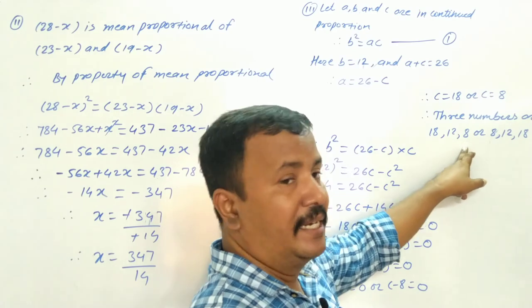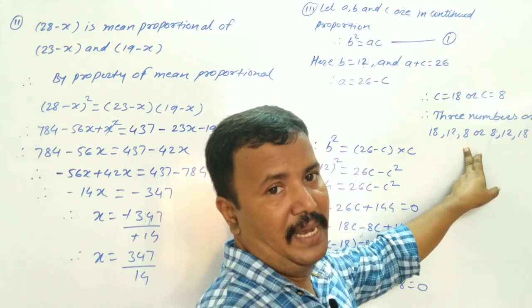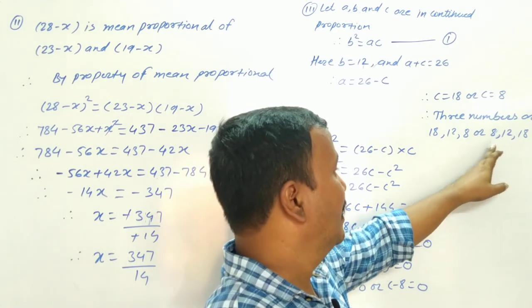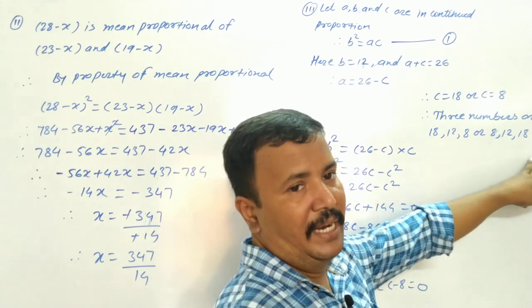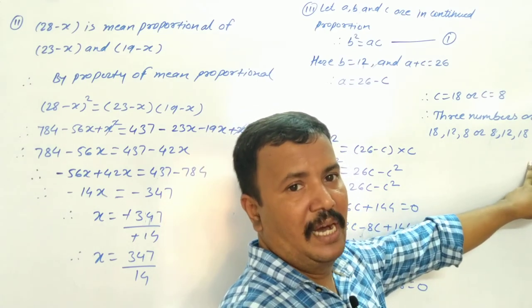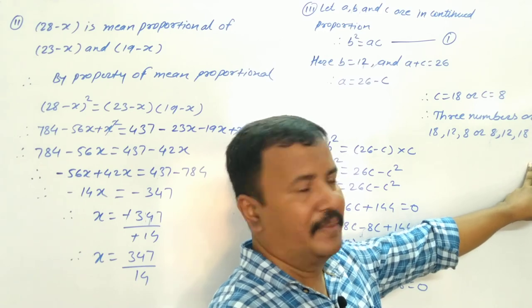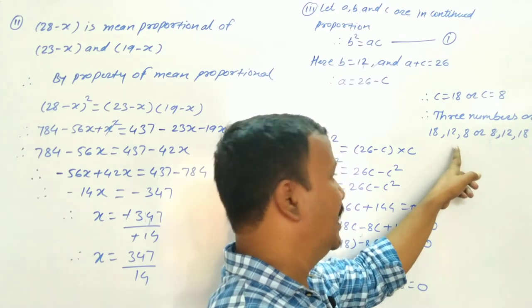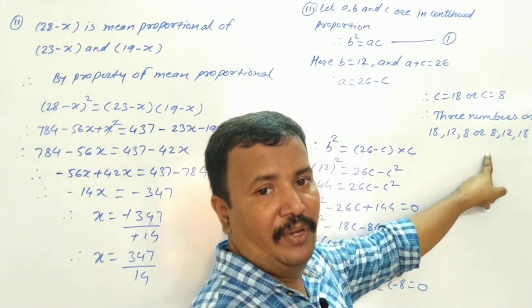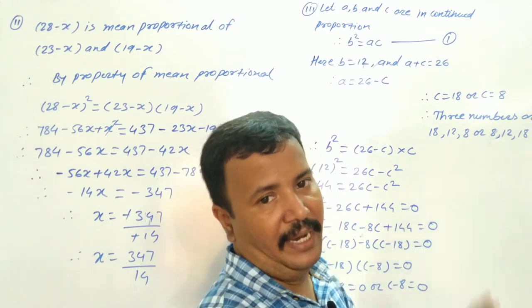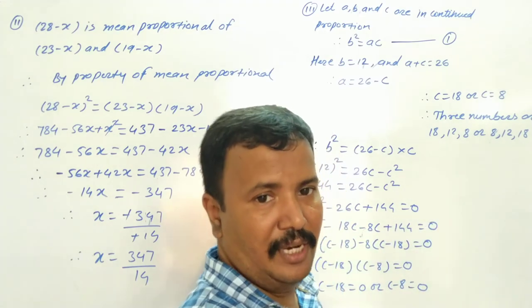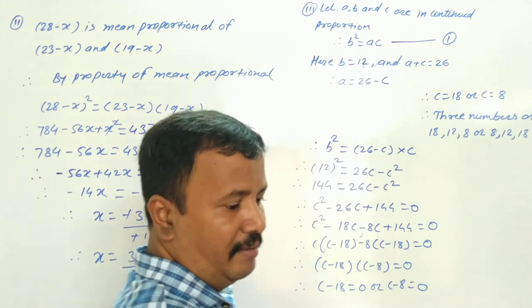So the three numbers can be 18, 12, 8 or 8, 12, 18. Understood everyone? Write it down.